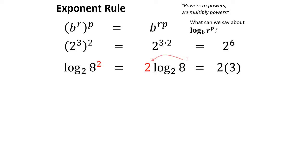For logarithms, if we had log base 2 of 8 squared, we bring the 2 down in front: that's 2 times log base 2 of 8. Log base 2 of 8 is 3, so that's just 2 times 3, or 6.